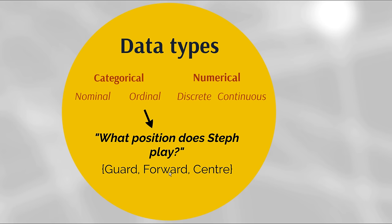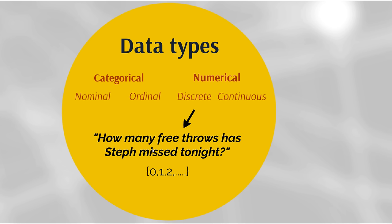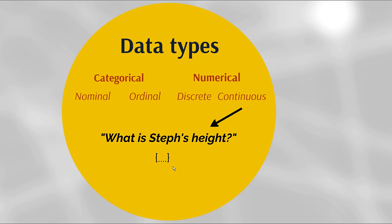An example of discrete numerical data might be: how many free throws has Steph missed tonight? He can miss 0, 1, 2, 3, etc. This is numerical data, but importantly he can't miss 1.5 or 2.3 free throws — there are only discrete possible values. Finally, continuous data might be Steph's height. Google lists his height as 191 centimeters, but his actual height might be something like 191.3217 — you can keep subdividing into as many decimal places as you like, making height a continuous numerical piece of data.